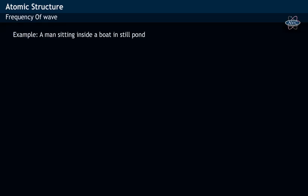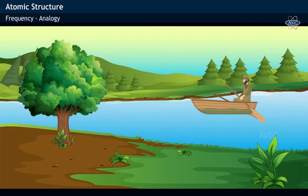Frequency of a wave can be explained by taking an example. Let us assume that a person is sitting on a boat in a still pond which is considered as a fixed point.